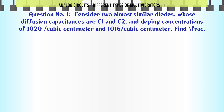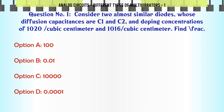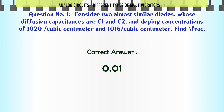Consider two almost similar diodes whose diffusion capacitances are C1 and C2 and doping concentrations of 10^20 cm³ and 10^16 cm³. Find C1/C2. A: 100. B: 0.01. C: 10,000. D: 0.0001. The correct answer is 0.01.